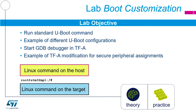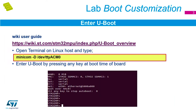As with the previous lab, color coding continues: yellow commands are for the host side, blue commands for your target side, and the icons in the top left corner for theory and practice are the same as before. For more details on the U-Boot overview and configuration, you can always go to the wiki — wiki.st.com — where you can find more information about U-Boot and its commands.